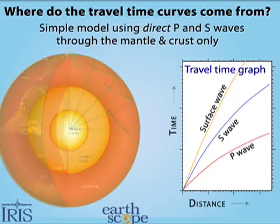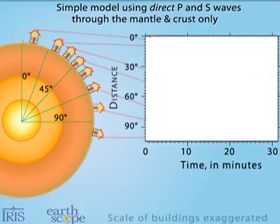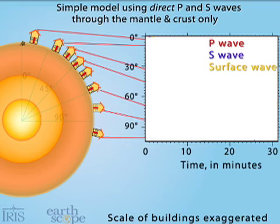The time versus distance graph of P-S and surface wave arrival times was constructed by analyzing thousands of earthquakes from hundreds of seismograph stations around the world.